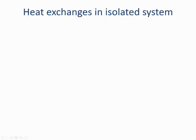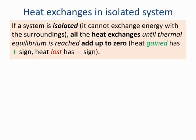In the previous example, we hinted at the fact that if you put a hot object inside a freezer, that freezer will gain energy. If there was no mechanism by which the excess energy was removed, the freezer interior would actually increase its temperature. If instead we had considered a thermos container that doesn't allow exchange of heat with the surroundings, the situation would be quite different. If a system cannot exchange energy with the surroundings — that is, if it's isolated in physics jargon — all the heat exchanges until thermal equilibrium is reached must add up to zero.